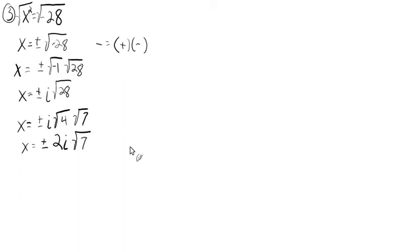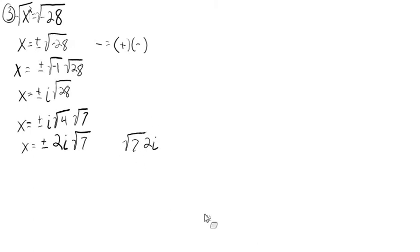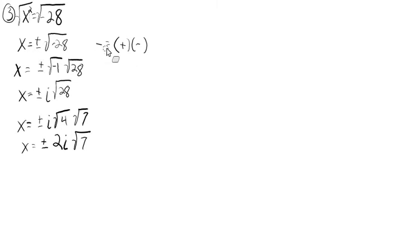And then we put the square root last, because if you were to write the square root of 7 times 2i and accidentally extended the square root symbol a little too far, you're not sure if the 2 is under there or not. So that's why we write the square root symbol last if possible. So there are our solutions: plus or minus 2i times the square root of 7. Weird looking answer, but the answer nonetheless.